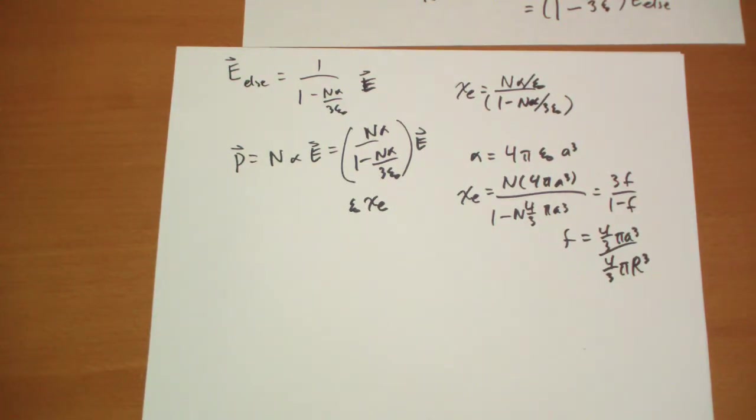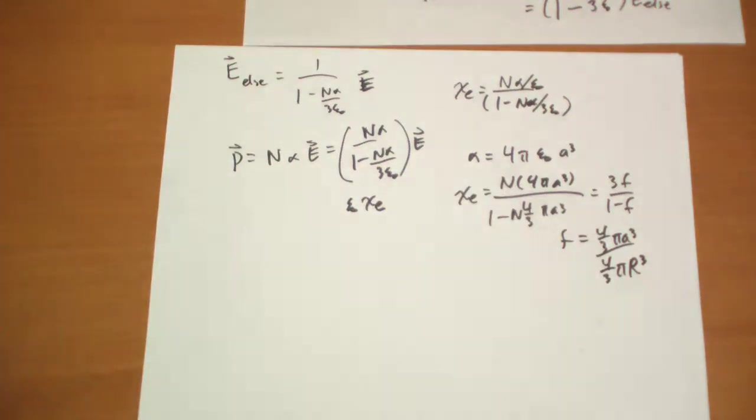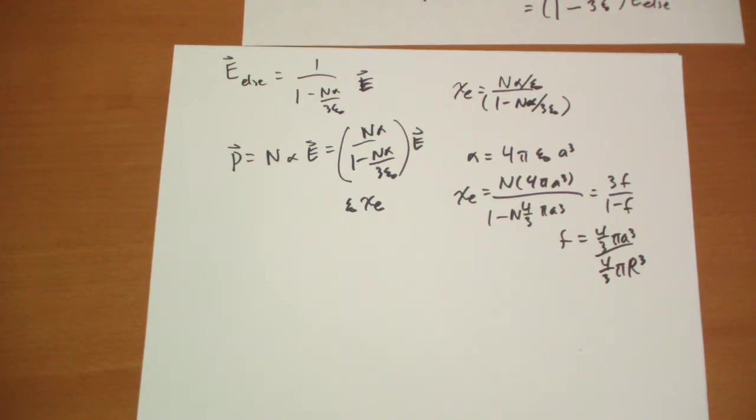When you have a gas where each atom takes a very small, tiny fraction of the total space, this is a really close equation. This gets you very close to the chi-e that you'd actually measure.